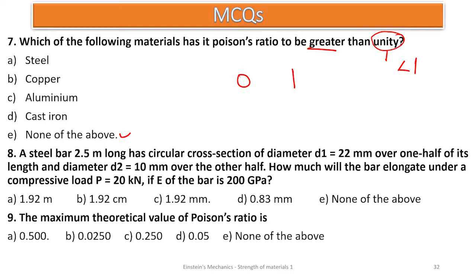Number eight: a steel bar of 2.5 meters long has a circular cross section of diameter 22 mm over half of its length and diameter 10 mm over the other half. How much would the bar elongate under a compressive load of 20 kilonewtons if the modulus of elasticity is 200 gigapascals? So here we have a bar with two different cross-sectional diameters.